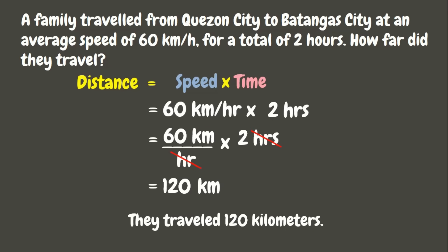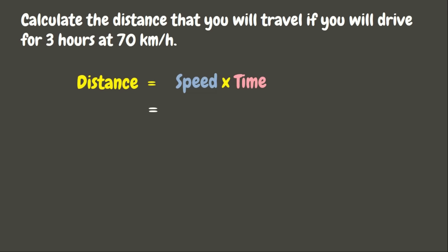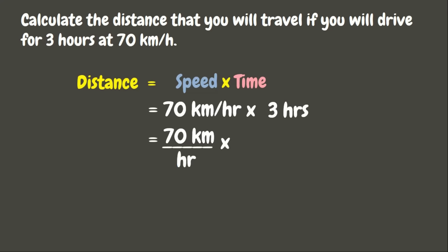Now, let's have another example. Let us calculate the distance that you will travel if you will drive for 3 hours at 70 kilometers per hour. Again, to solve for the distance, we are going to multiply the speed and the time. Here, the speed is 70 kilometers per hour, while the time is 3 hours. Now, let us solve — let's multiply 70 and 3.